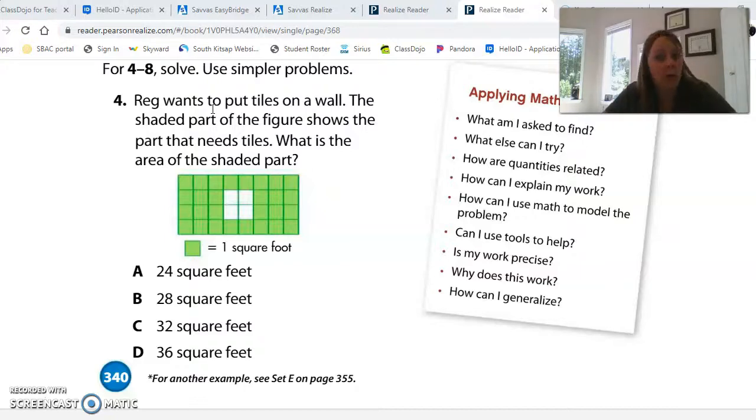Reg wants to put tiles on a wall, just like in my shower. The shaded part of the figure shows the part that needs tiles. What is the area of the shaded part? So what are we going to do? We're going to do the exact same thing. First, let's figure out the entire thing. One, two, three, four, five, six, seven, eight. Okay, so I know that the area of the whole thing is eight times one, two, three, four. And eight, sixteen, twenty-four, thirty-two. Good job. Thirty-two square, and I noticed that it changed to feet.